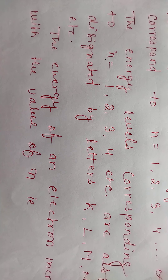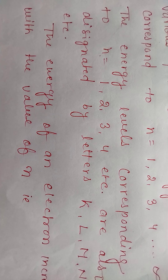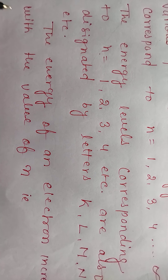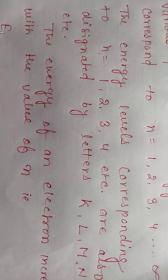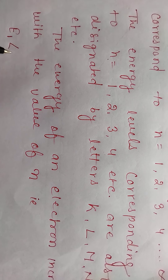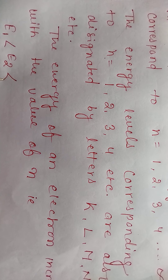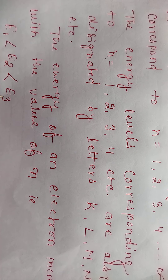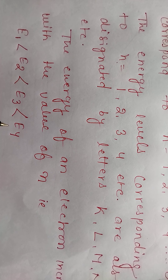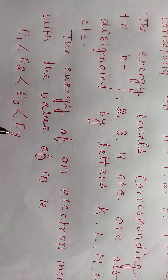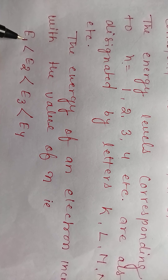The energy of an electron increases with the value of n. That is, E1 is less than E2, E2 is less than E3, and E3 is less than E4.